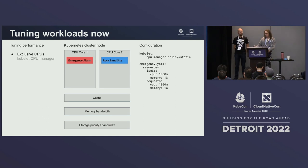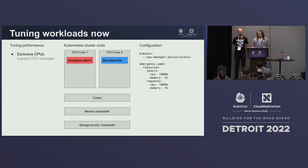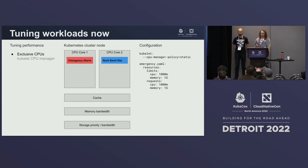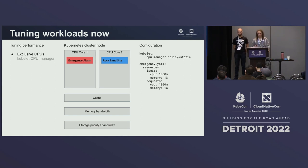In Kubernetes today, we can represent this with a static CPU policy — separating them onto dedicated CPU cores — and have QoS classes represented in the limits and requests for pods. But that still doesn't give us everything we want. There are all these other resources that need to be isolated, and cache thrashing on the rock band website could still cause interruptions to the emergency alarm.